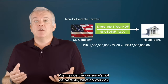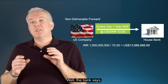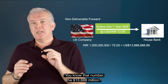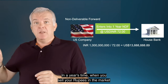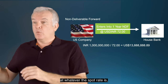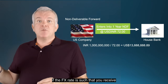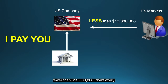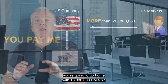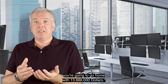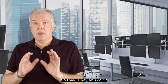Since the currency is not deliverable, what do you do? The bank says: remember that number — the 13.888 million dollars? In a year's time, when you sell your rupees in the market at whatever the spot rate is, if the FX rate is such that you receive fewer than 13,888,000 dollars, don't worry, I'll pay you the difference. If you get more than 13.88 million, you pay me the difference. But whatever happens, that evening you're going to go home with 13,888,000 dollars. So you say, okay, let's do it.